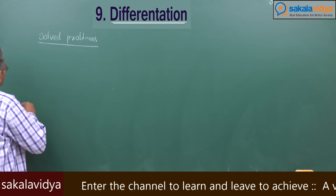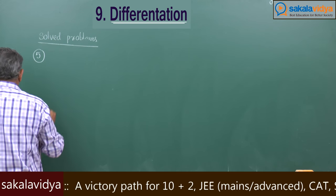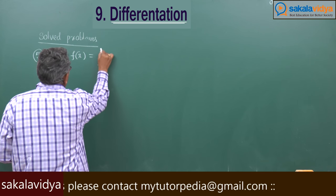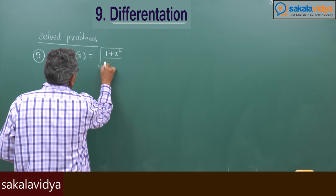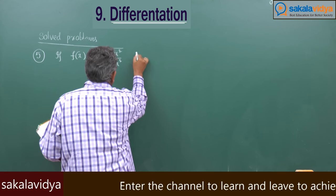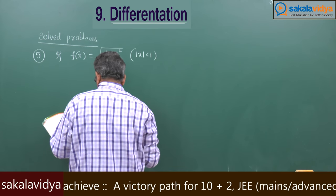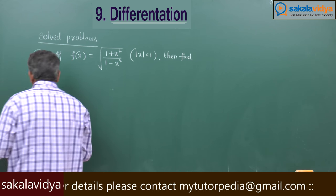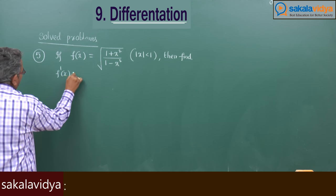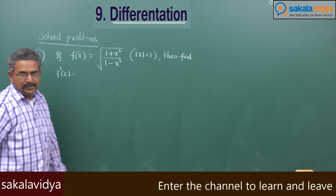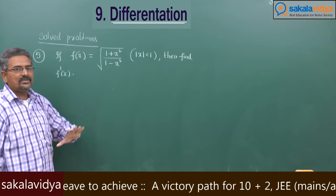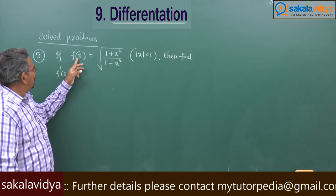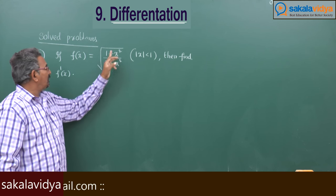Next, the fifth problem: if f of x is equal to the square root of 1 plus x squared divided by 1 minus x squared, where the modulus of x is less than 1, then find f dash x. Here f of x equals root of 1 plus x square by 1 minus x square.